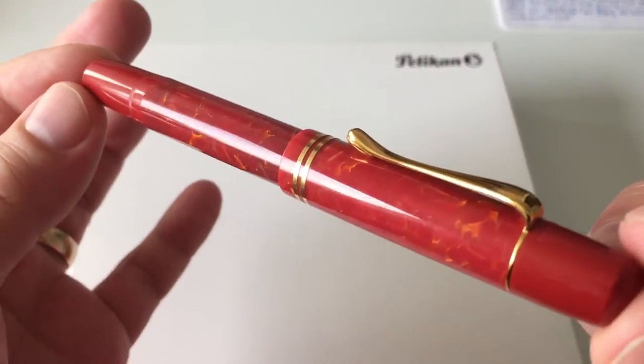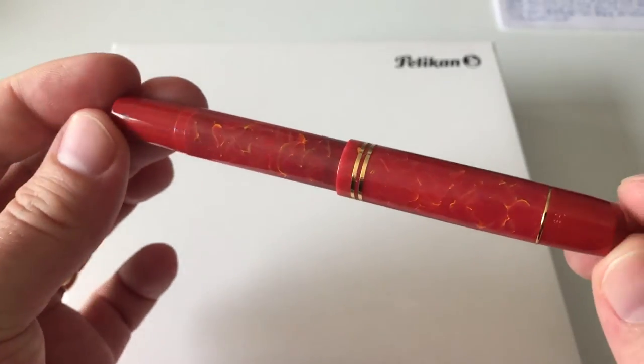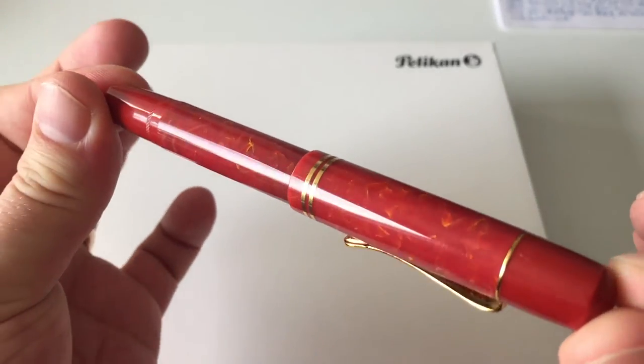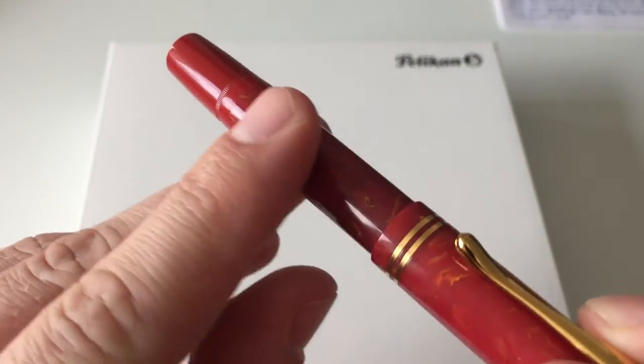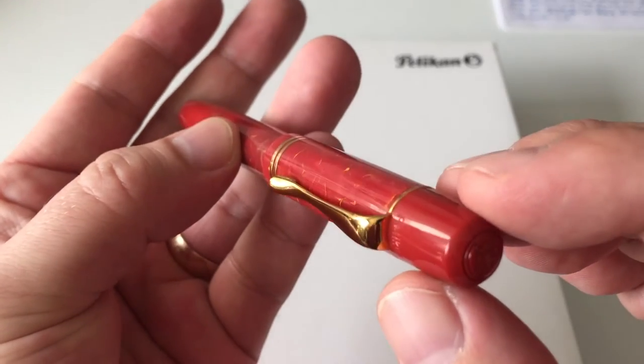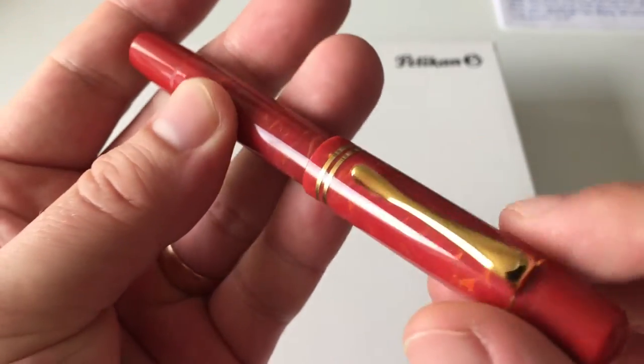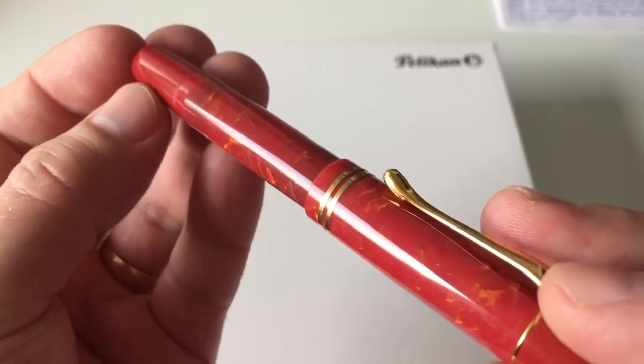You can already see we have some sunshine out today that this acrylic pen is made from a really deep rich red resin that is covered by an orangey yellow marbling.